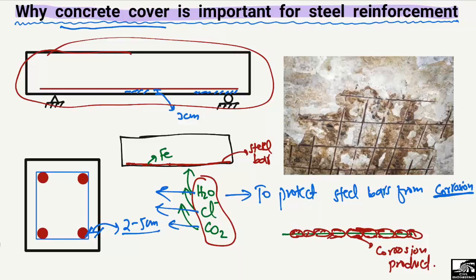If we don't provide sufficient concrete cover, we can see corrosion products forming around the steel bar, as clearly seen in this picture. The iron reacts with outside elements and forms corrosion products. Because corrosion products are larger in size, they push and dismantle the surrounding concrete, causing it to fall out. In order to avoid the formation of these corrosion products, we must provide a certain depth of concrete cover to protect the steel reinforcement.